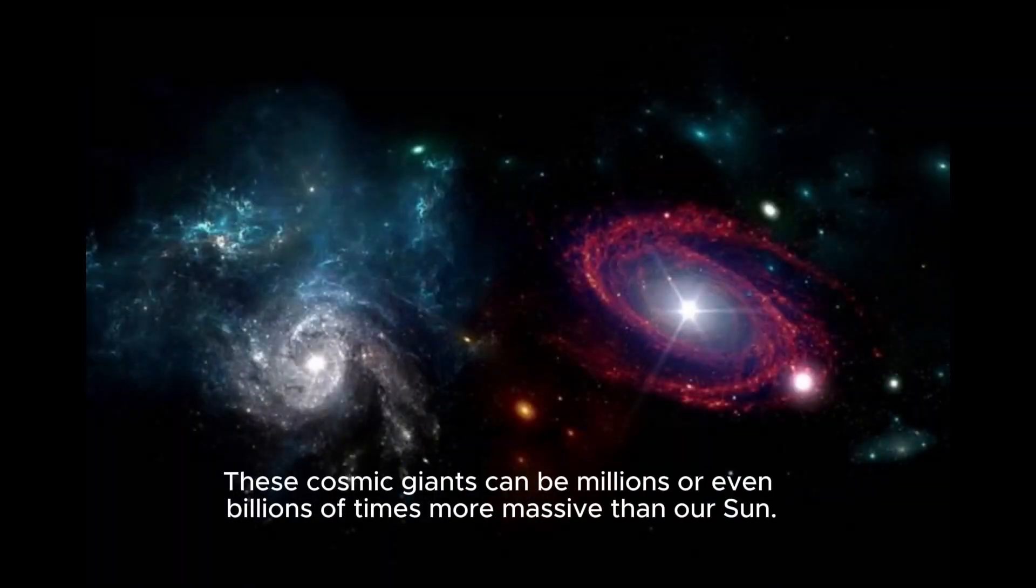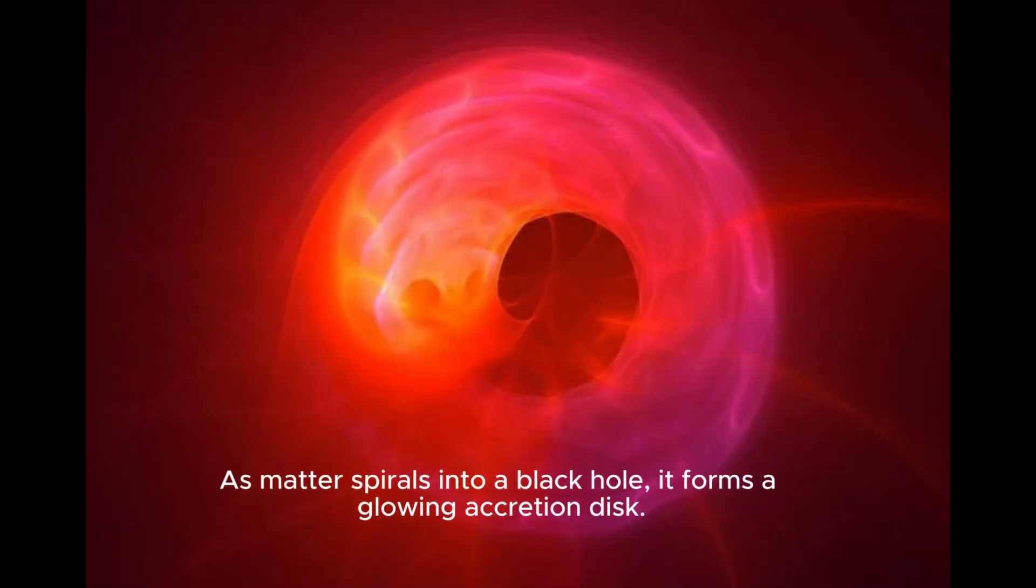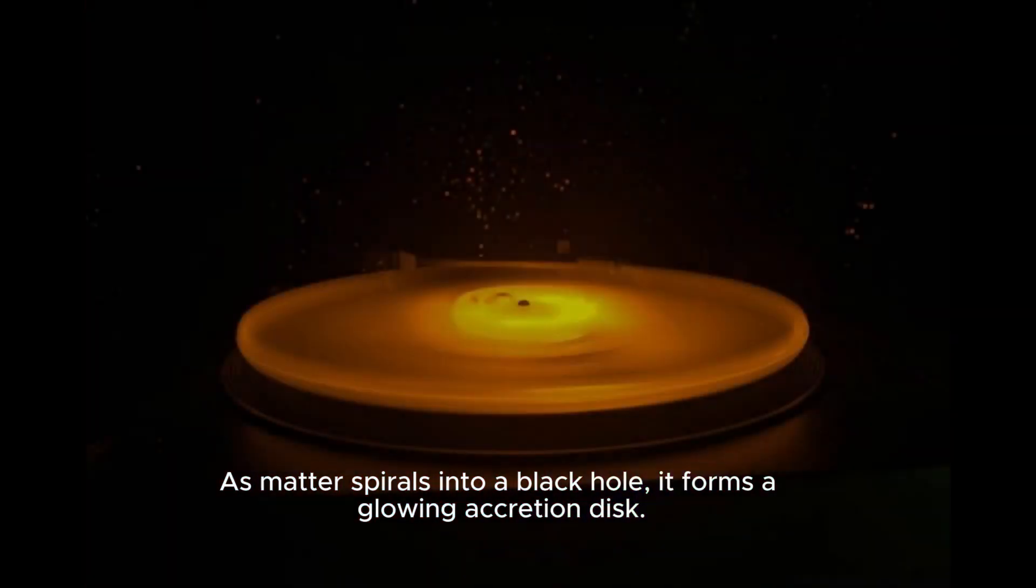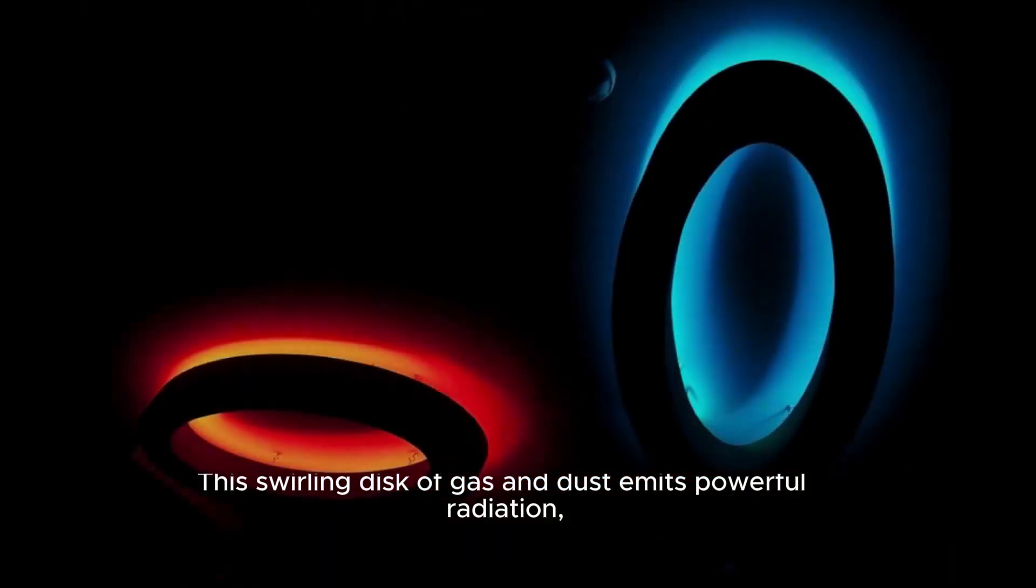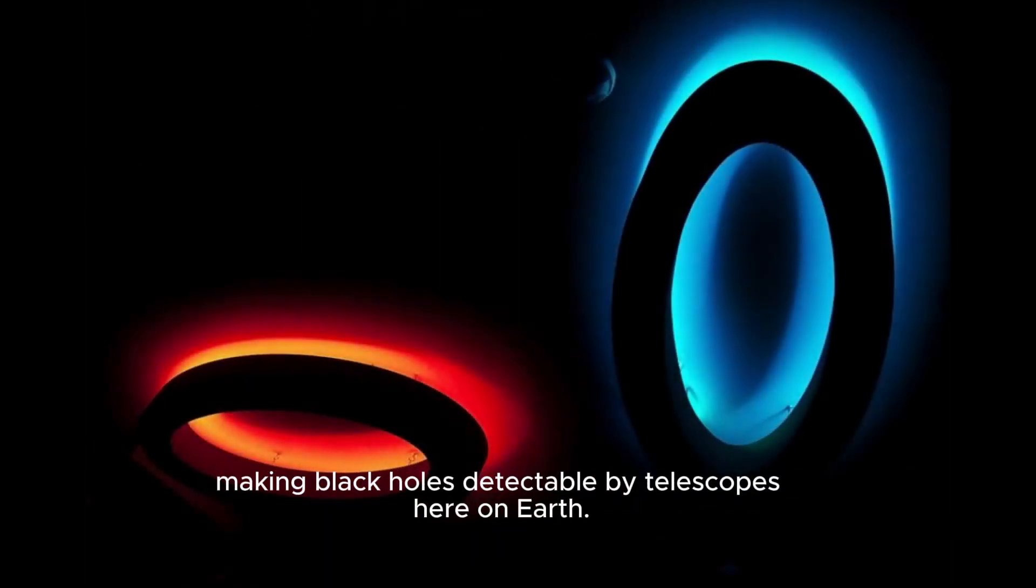These cosmic giants can be millions or even billions of times more massive than our sun. As matter spirals into a black hole, it forms a glowing accretion disk. This swirling disk of gas and dust emits powerful radiation, making black holes detectable by telescopes here on Earth.